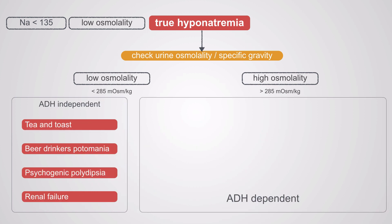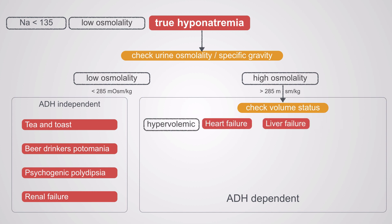Moving to the other side, we have ADH-dependent hyponatremias. These patients will have high urine osmolalities — and again, the higher the urine osmolality, the more accurate this diagnosis will be. The next step is to check volume status, because that's how we divide these up. We have hypervolemic patients with heart failure, cirrhosis, and nephrotic syndrome.